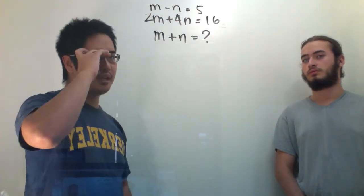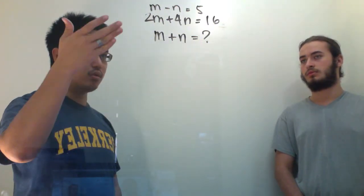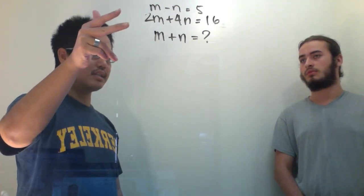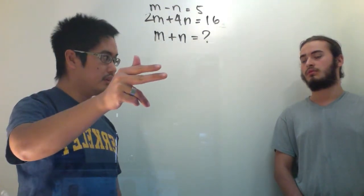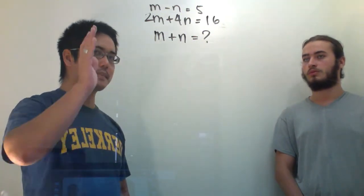Alright, one way you could do it is you could solve these two problems using substitution or simultaneous equations. After that you could get m, you could get n, you could add those two numbers together, and you can get your answer.